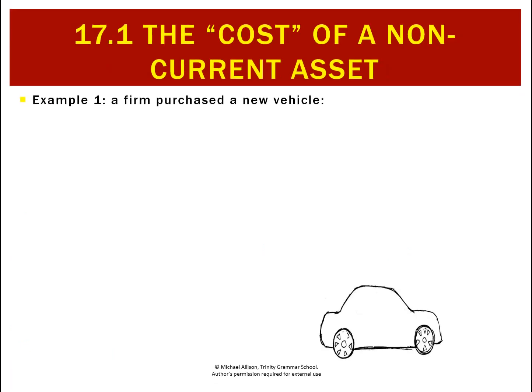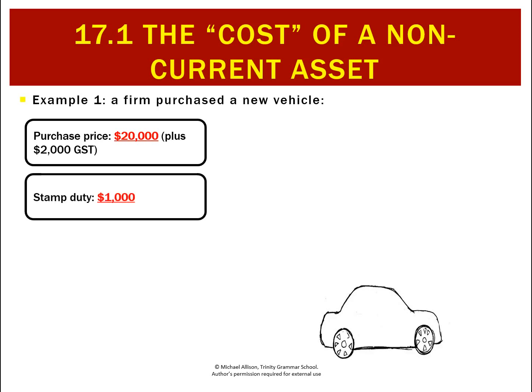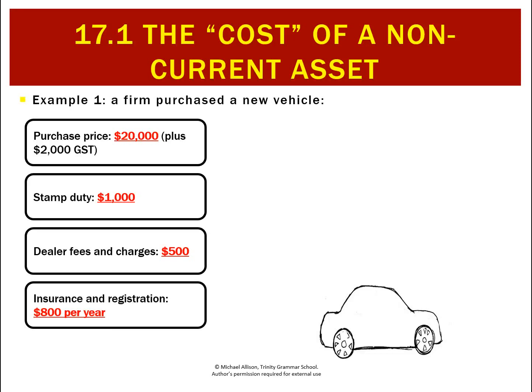Take this example: we purchased a new vehicle with a $20,000 purchase price plus GST, some stamp duty which is a government tax incurred when buying new cars, dealer fees and charges of $500, and insurance and registration of $800 per year. Let's calculate the cost of the car. We've obviously got the purchase price of $20,000.